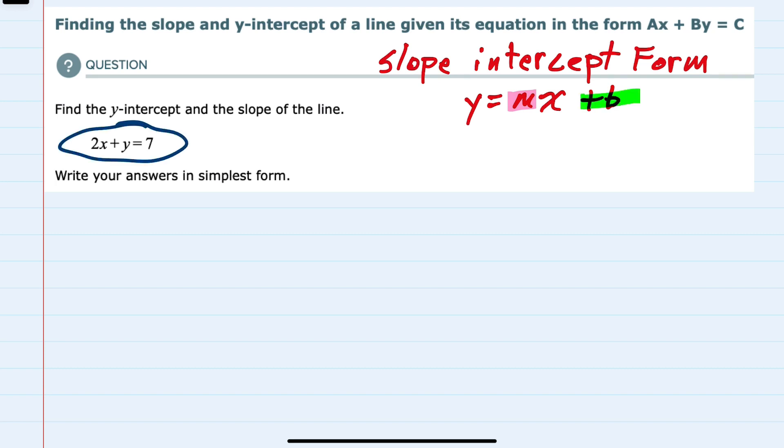To write this equation in slope-intercept form, I need to isolate the y on one side of the equation and move everything else to the other side.